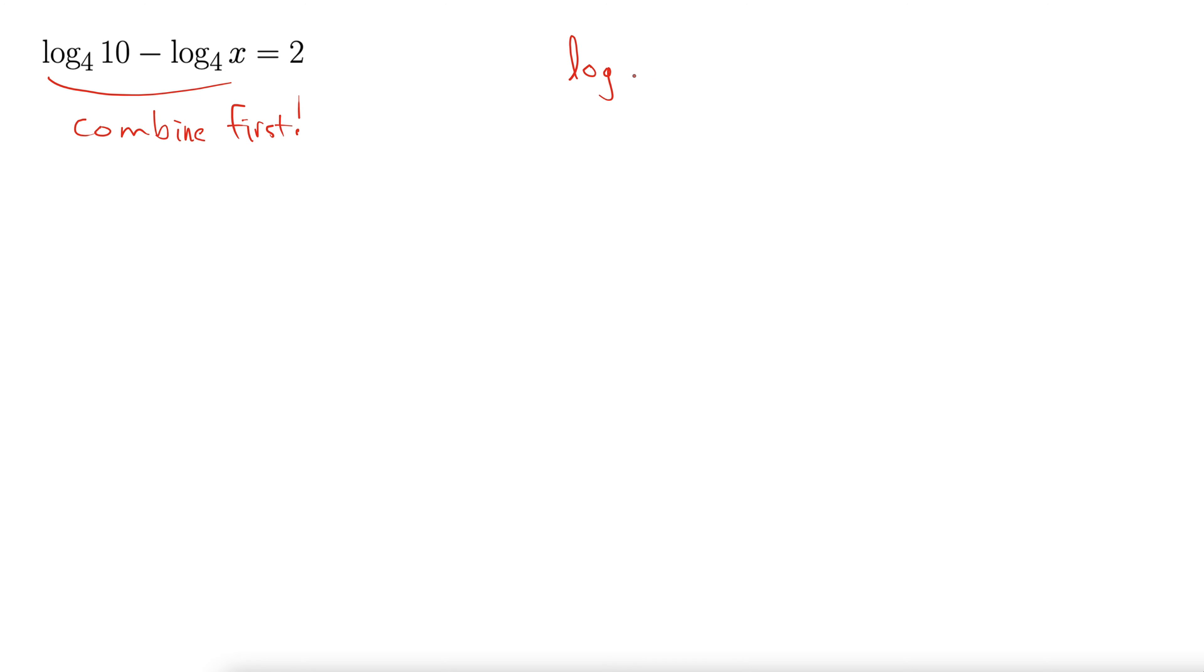Recall that log base b of A minus log base b of B is simplified or combined as log base b of A over B. That's the property of logarithms we're going to use here.